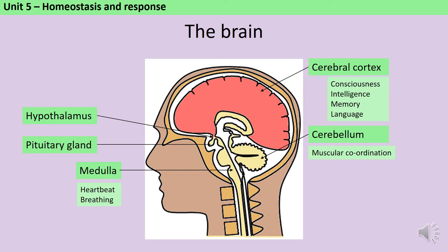The pituitary gland is a master gland. That means it acts as a coordination centre, and it causes a cascade of other hormones to respond to changes in the environment. The hypothalamus has a whole range of functions, but the one you need to know about for GCSE biology is that it's the site of the thermoregulatory centre, which is responsible for controlling your body temperature.